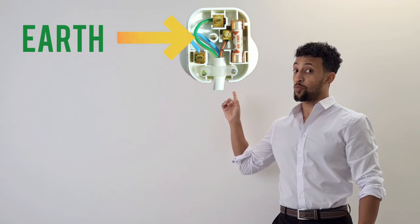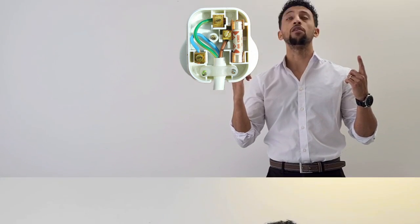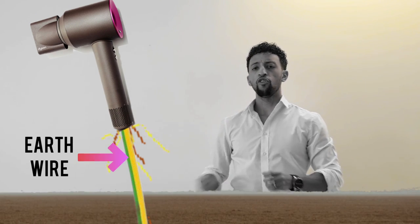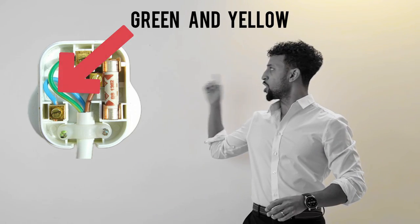I thought you might inquire. The last one is the earth, its purpose does inspire. Prevents you getting shocked and meeting someone higher. If there is a break inside, the earth will acquire the current to the ground, from there it will expire. Green and yellow is their colour,